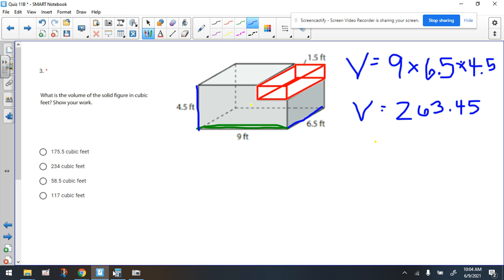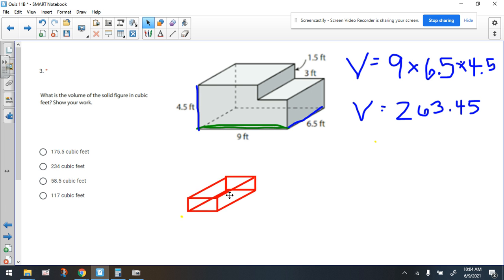Because what we need to do next is think about what are the dimensions of this piece. So here's what we know. They tell you right here that this line, they're telling you that that's 1 and 5 tenths. So let's call that the height of this thing. They're telling us that this line right here is 3. So that would be the width of this thing. So far we got 1.5 by 3.